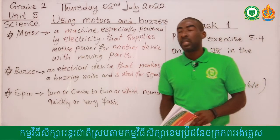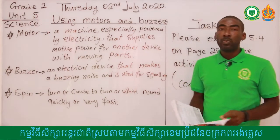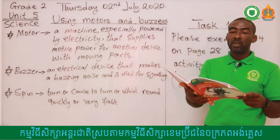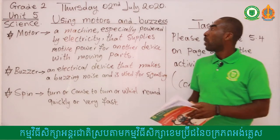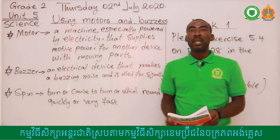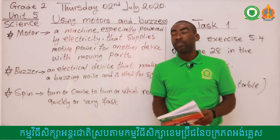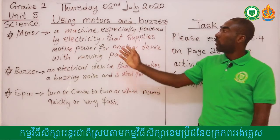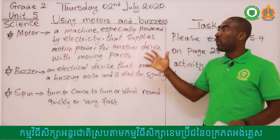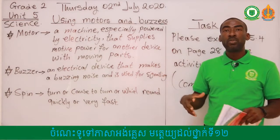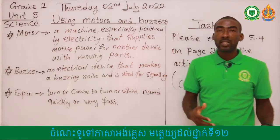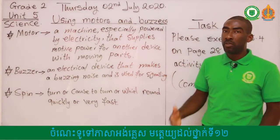So please turn your book to pages 53, 54 and 55. We'll look at the meaning of a motor and then the meaning of a buzzer, so that we can use the two to understand our lesson on using these two devices or components of a machine.